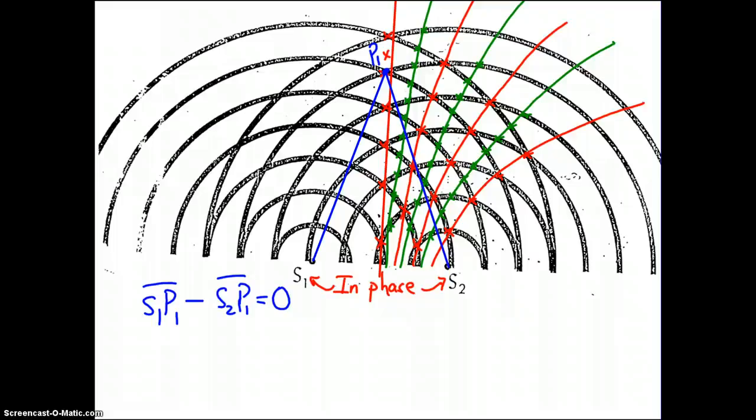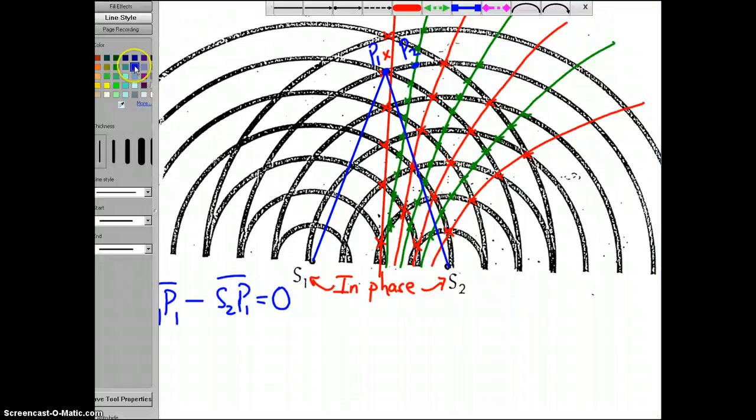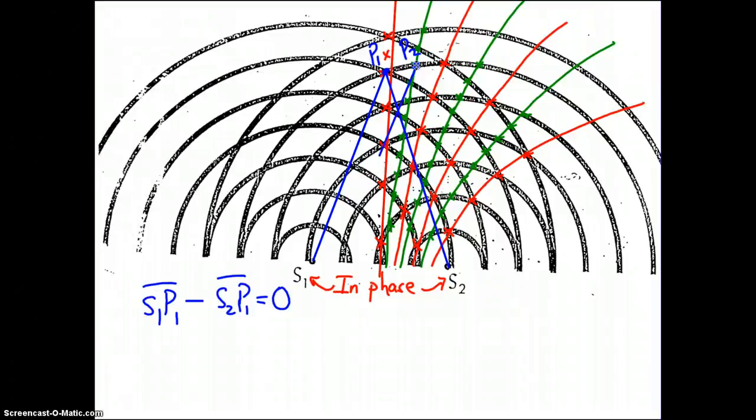Now I'm going to select another point. I'm going to select this point right here that lies on the first nodal line to the right of the center line of reinforcement, and I'm going to call that P2. I'm now going to draw, again, two line segments that go from S1 to P2 and S2 to P2.